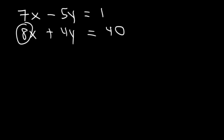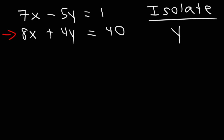The second thing to consider is whether to solve for x or y. To avoid fractions, pick the variable with the lowest coefficient — in this case y, because 4 is less than 8. So we want to isolate the y variable in the second equation. By doing so, we can avoid fractions, making our work much easier.